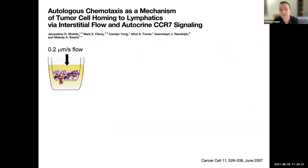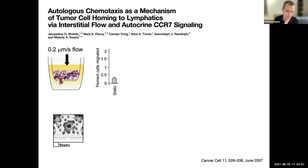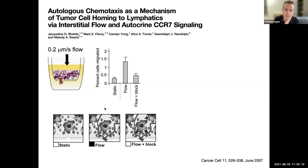The importance of interstitial flow in guiding metastatic cancer cells was sort of vividly illustrated in a landmark paper in 2007 by the group of Melody Schwartz, where they used an in vitro system to provide cells with flows that were of the same order of magnitude as interstitial flows in the body. And, of course, when there was no flow, then they didn't observe very much cell migration, but when they turned on the flow, then they saw that the cells migrated in the direction of the flow. And then importantly, when they blocked a receptor they thought was involved in this process, then the migration stopped or was less.